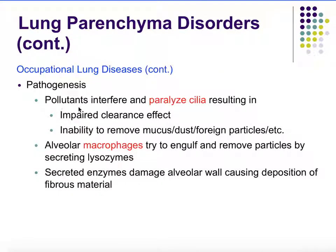Regarding pathogenesis: when you inhale these chemicals, they interfere with and paralyze the cilia. The cilia in our lungs helps remove mucus, which traps dust and foreign particles before they reach the alveoli. If the cilia are paralyzed, clearance of mucus is impaired. The immune system mobilizes — macrophages try to engulf the particles by releasing lysosomal enzymes — and these secretions actually damage the alveolar wall.